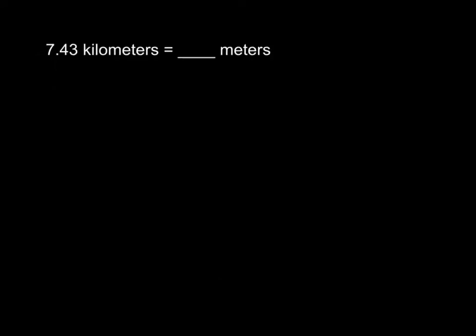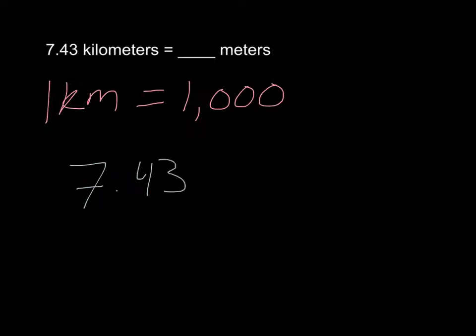We have 7 and 43 hundredths of a kilometer is equal to how many meters? Looking at your table, you can see that 1 kilometer, 1 km, is equal or the same as 1,000 meters. From there, I can do 7 and 43 hundredths times 1,000.